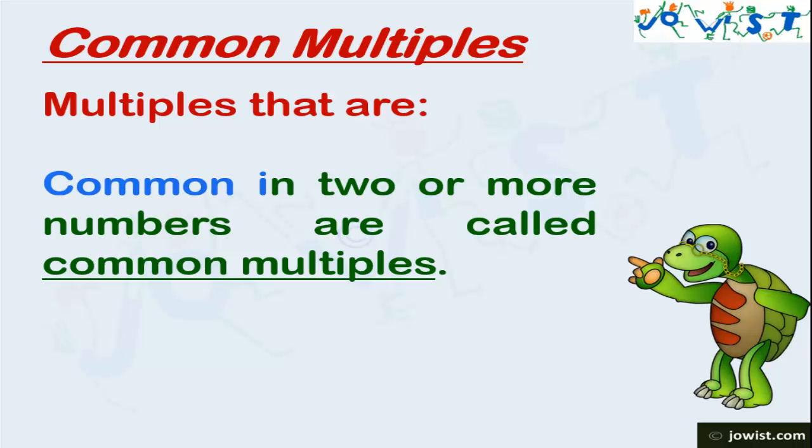What are common multiples? Multiples that are common in two or more numbers are called common multiples. Let's understand this with the help of an example.